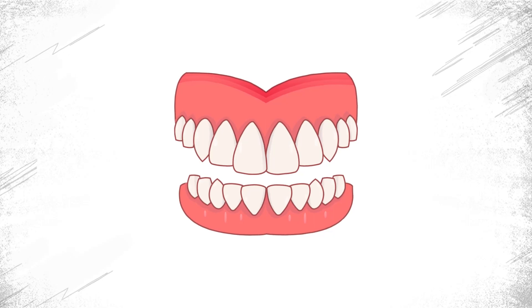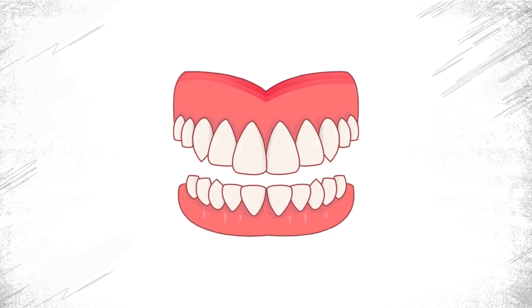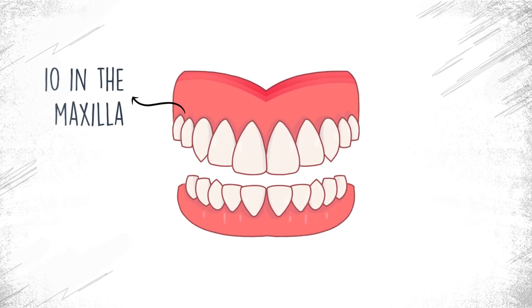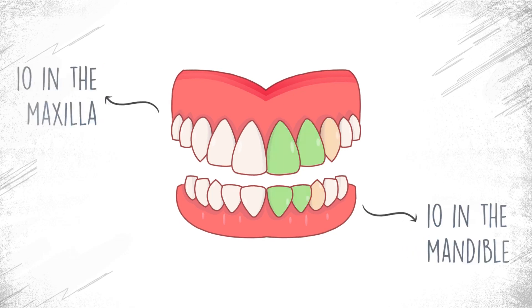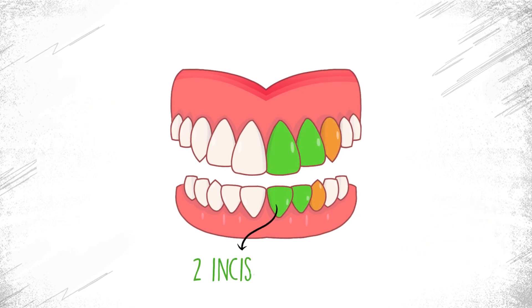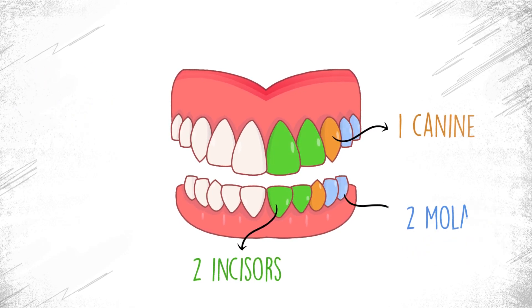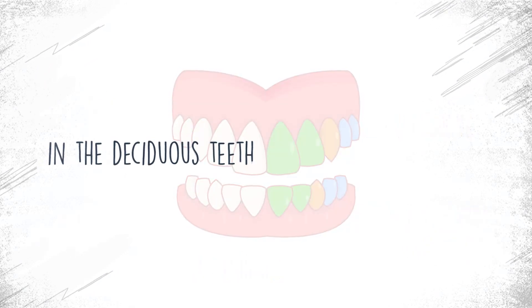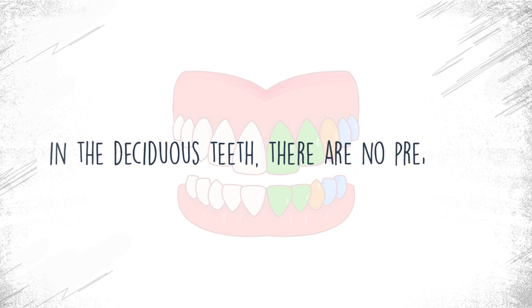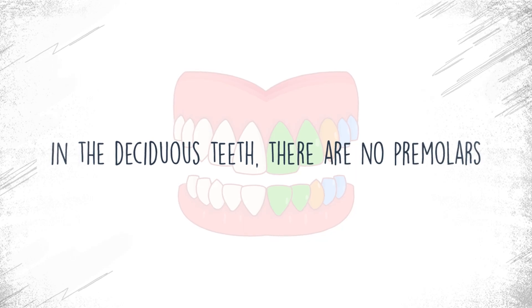Children have 20 baby or deciduous teeth — 10 in the maxilla and 10 in the mandible. Each quadrant contains two incisors, one canine, and two molars. Note that in the deciduous teeth there are no premolars.